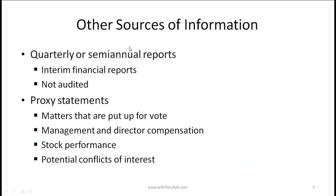Other sources of information include quarterly or semi-annual reports. Companies typically provide annual reports every fiscal year, but every three or six months they also produce interim financial reports. Quarterly reports are an example of interim financial reports, and these are not audited. The final annual reports are audited, but interim reports are not — and I'll talk about what audited means shortly.